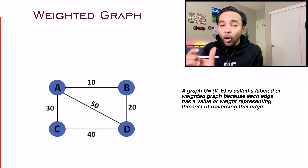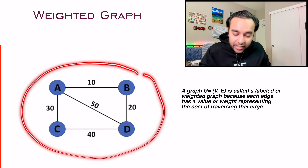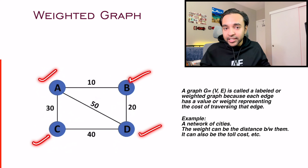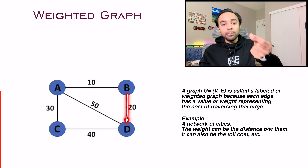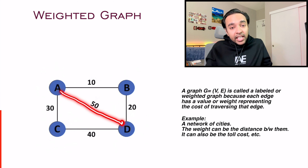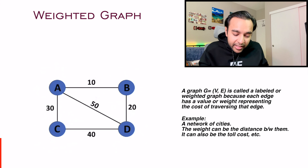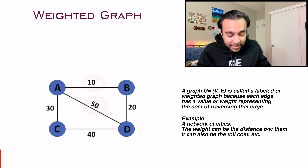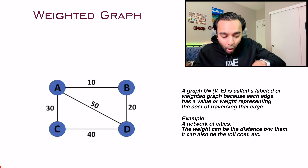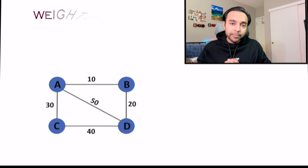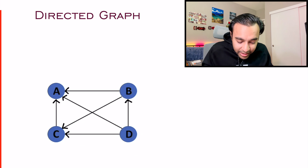Until now all the graphs had simple edges, but what happens if we add some weight to an edge? This number represents the cost to reach from one node to another, and this cost can be in any form. Think of the graph as a network of cities — the weight could be the distance from city A to city B, or from city B to city D. You can also define weights as toll costs. All of these scenarios come under the example of a weighted graph.